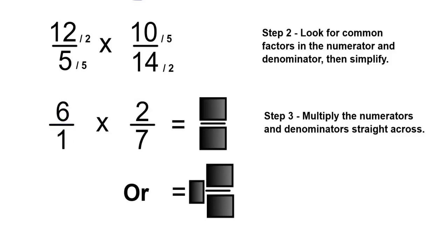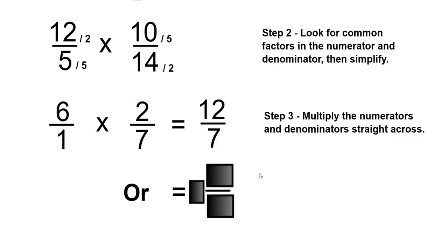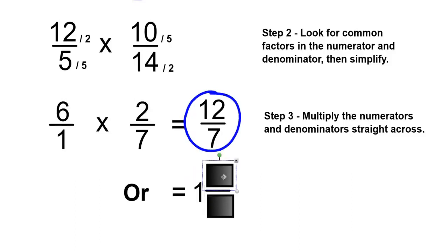Step 3: multiply the numerators and denominators straight across. 6 times 2 is 12, and 1 times 7 is 7. So your final answer will be 12 over 7 as an improper fraction. If you want to make this into a mixed number, your answer will be 1 and 5 over 7.